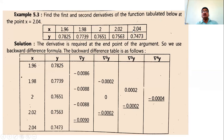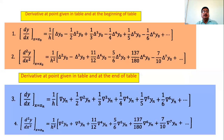Since x = 2.04 is the last value of x in the table, we use the backward difference operator formulas — specifically the formulas for the derivative at a point given in the table and at the end of the table. These two formulas give us the first order and second order derivative at the last point.